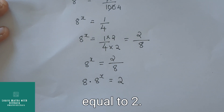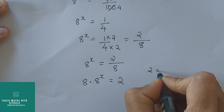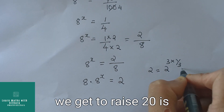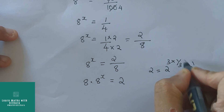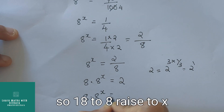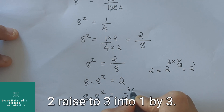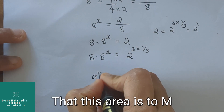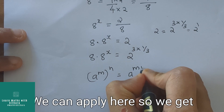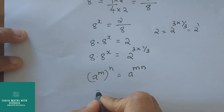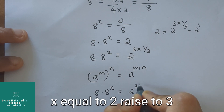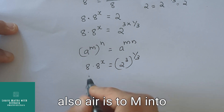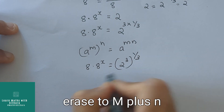We can take 8 to the left-hand side, so 8 into 8 raised to x equal to 2. We can write 2 as 2 raised to 3 into 1 by 3, because the 3s get cancelled and we get 2 raised to 1, which is equal to 2. Also, a raised to m raised to n equals a raised to m×n, and a raised to m into a raised to n equals a raised to m plus n.